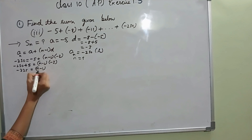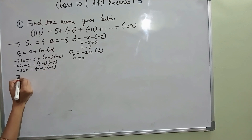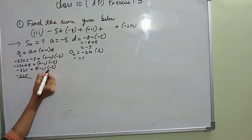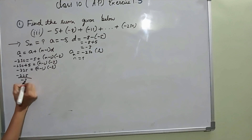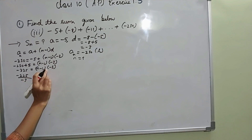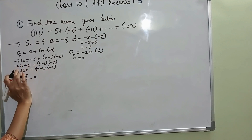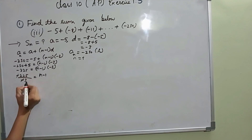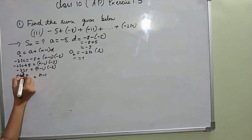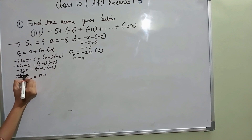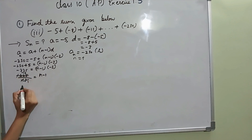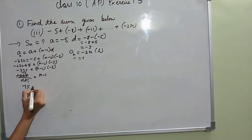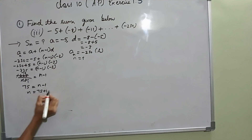N minus 1 into minus 3 equals minus 225. Transferring minus 3 to the other side as division, minus minus get cancelled: 225 divided by 3. Working: 3 sevens are 21, remainder 15; 3 fives are 15. So 75 equal to N minus 1, giving N equal to 75 plus 1, that is 76.